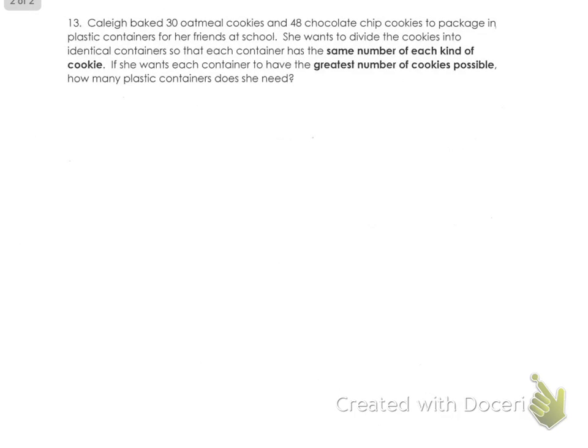We are on to the back side of our greatest common factor and least common multiple practice. It says that Callie baked 30 oatmeal cookies and 48 chocolate chip cookies to package in plastic containers for her friends at school. She wants to divide the cookies into identical containers so that each container has the same number of each kind of cookie. If she wants each container to have the greatest number of cookies possible, how many plastic containers does she need?